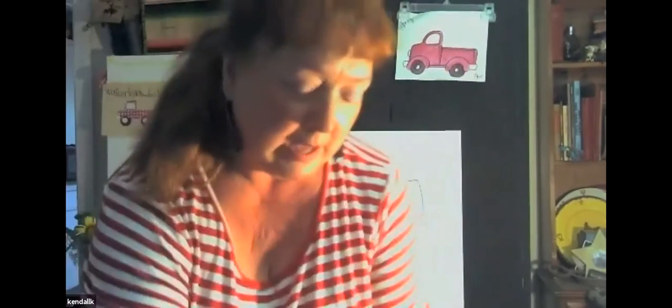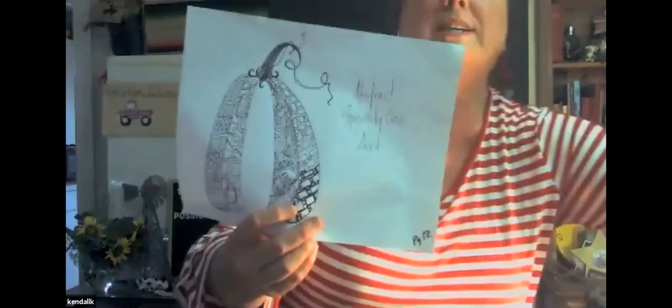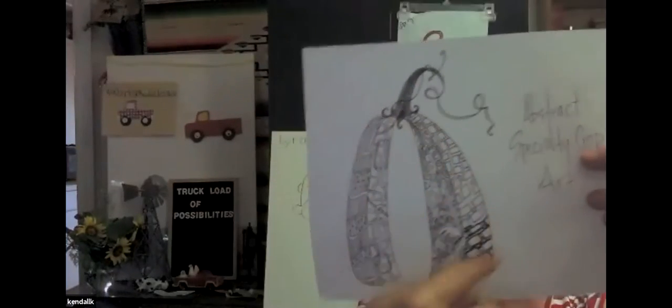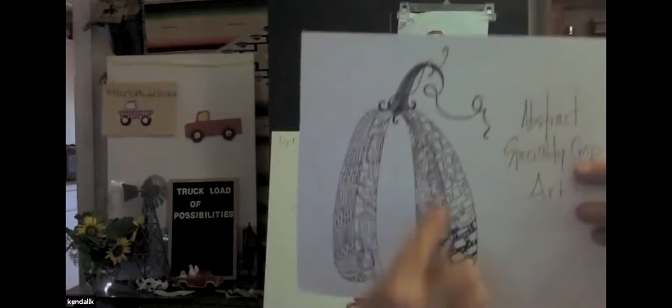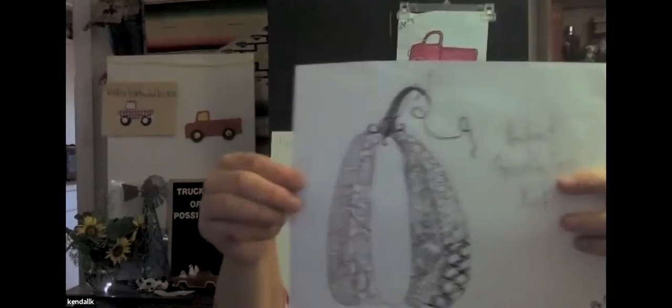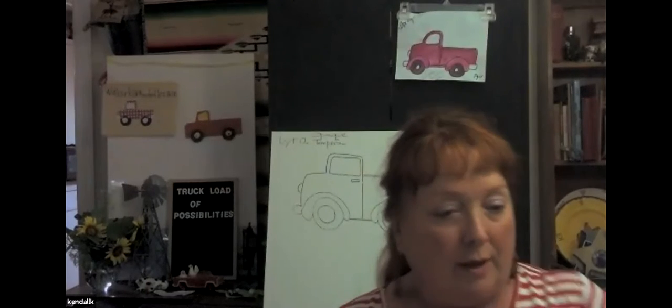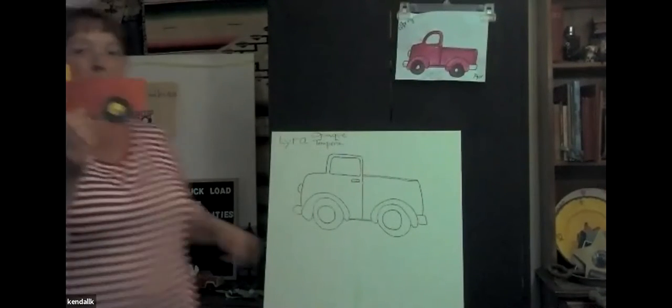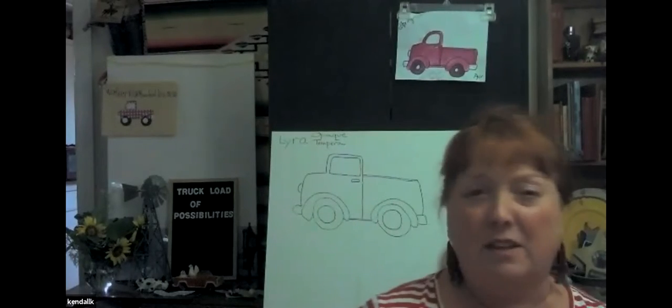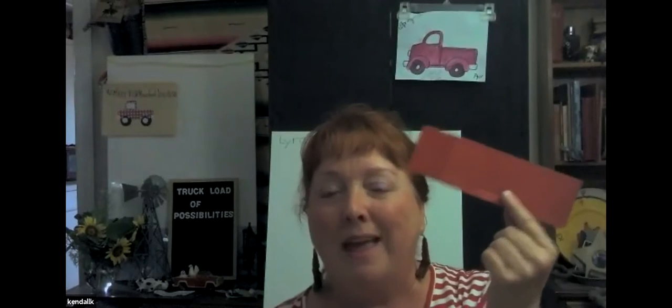In the 'Fruits Nuts Veggies Oh My' book there is also an abstract specialty crop art activity — we drew the pumpkin with red crayon and filled it in with different line designs, sometimes called Zentangles or line designs. For our next activity we're going to make a paper truck with rolling wheels. I start with a piece of red construction paper, cut it into strips — about four or five strips — and each student needs two strips.